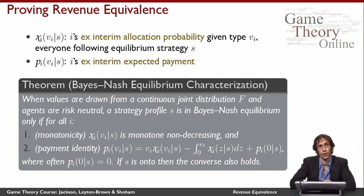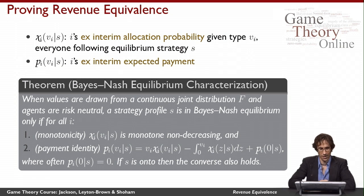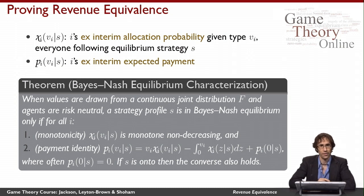Here's a stronger theorem than the revenue equivalence theorem, but it should be easy to see that this implies the revenue equivalence theorem directly. Once we have this theorem, we basically get the revenue equivalence theorem for free. What the revenue equivalence theorem tells us is that mechanisms that allocate in the same way all have to have the same payment function. What this stronger result tells us is exactly what the payment function has to be, plus a bit about how the allocation has to work. It really shows us exactly what the equilibrium needs to be. As a side effect, we'll see that any two mechanisms that allocate in the same way have to have the same payments.